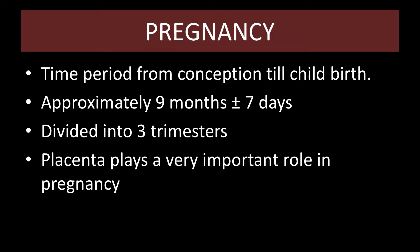How do we define pregnancy? We can define pregnancy as the time period from conception till childbirth — from the time fertilization occurs till the child has taken birth — and it is approximately 9 months plus or minus 7 days in the case of human beings. We can divide this entire pregnancy period into 3 trimesters, divided according to the functional as well as the physiological developments taking place in the embryo.